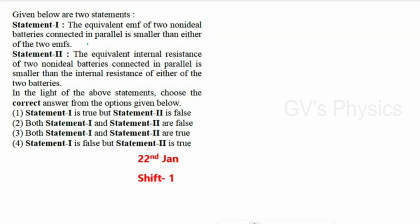Seventh question — theory: Statement 1 says the equivalent EMF of two non-identical batteries connected in parallel is smaller than either EMF. This is incorrect — the equivalent EMF lies between the two EMF values (like an average), not smaller than both. For example, with 2 V and 4 V, the equivalent will be somewhere between 2 and 4 volts.